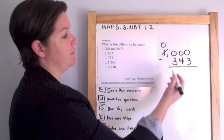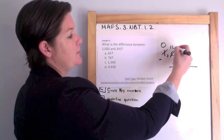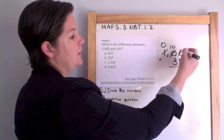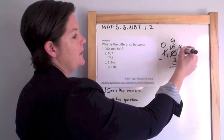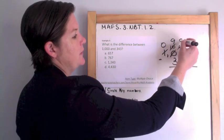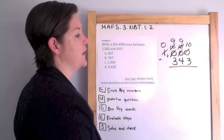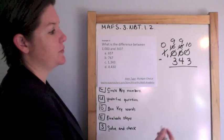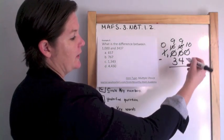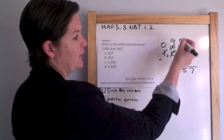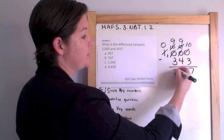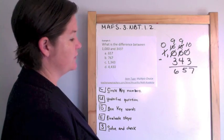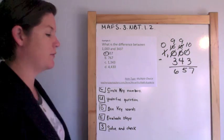He has nothing left. This becomes a 10. He's going to borrow now. That becomes a 9. And he becomes a 10. 10 minus 3, 7. 9 minus 4 equals 5. 9 minus 3 equals 6. 657. That is my answer for A.